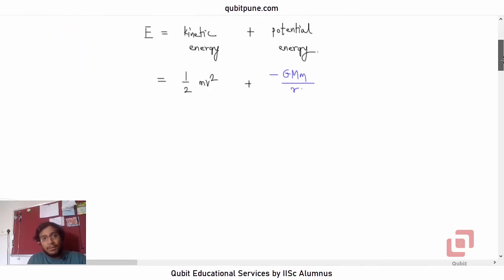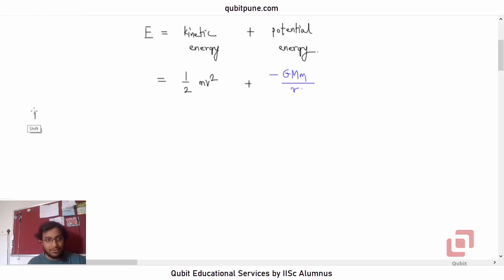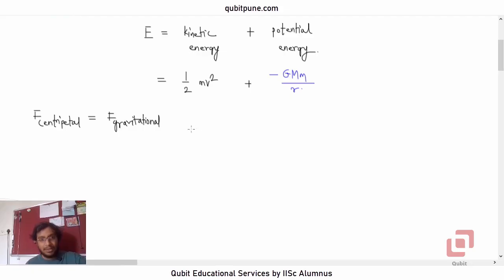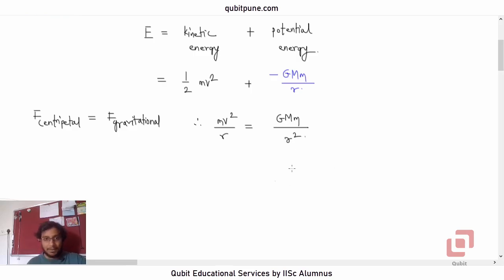We are now going to introduce the fact that the centripetal force in this case is provided by the gravitational force. After all, the particle is rotating because of centripetal force. So centripetal force equals gravitational force: mv squared by r equals GMm upon r squared — that is Newton's law of gravitation.